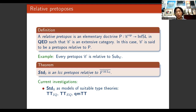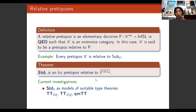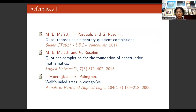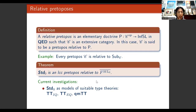Our current investigations are focused on finding those type theories that can be modeled in the category of H-setoids. In particular, we are focusing on type theories with quotient types — both intentional and extensional — and on the minimal type theory with quotient types of Maietti and Sambin. This is the end of the talk; please send me an email for any questions or comments, and thank you for your attention.